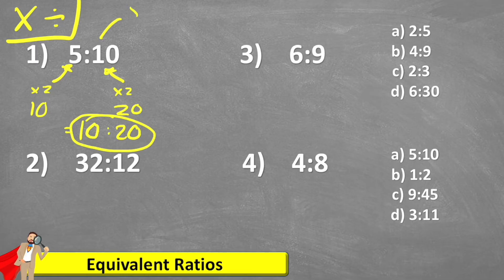Let's do it again this time, but let's times it by three. Five times three is 15, 10 times three is 30. So 15 to 30 is an equivalent ratio.